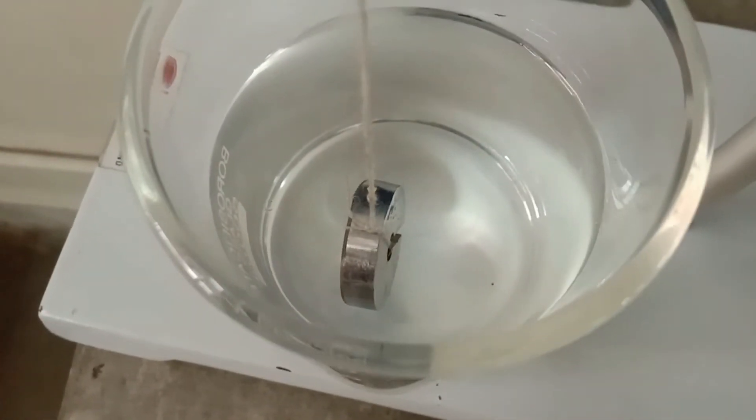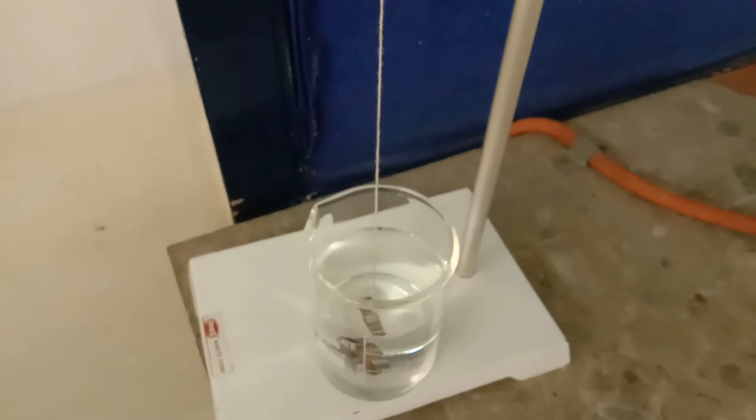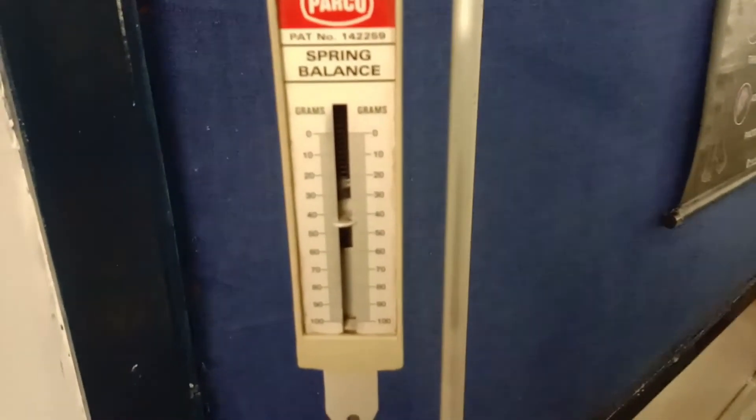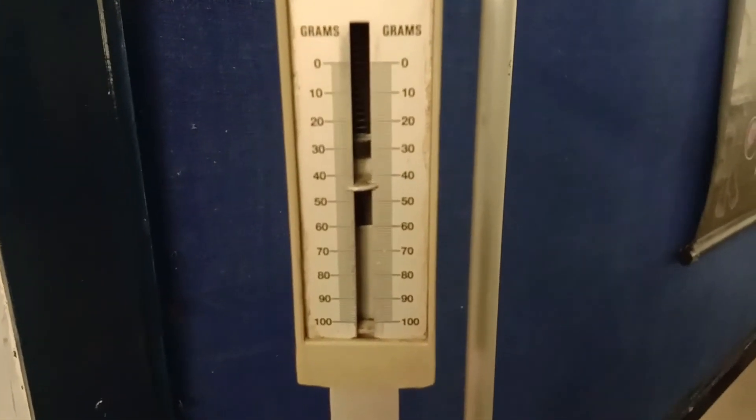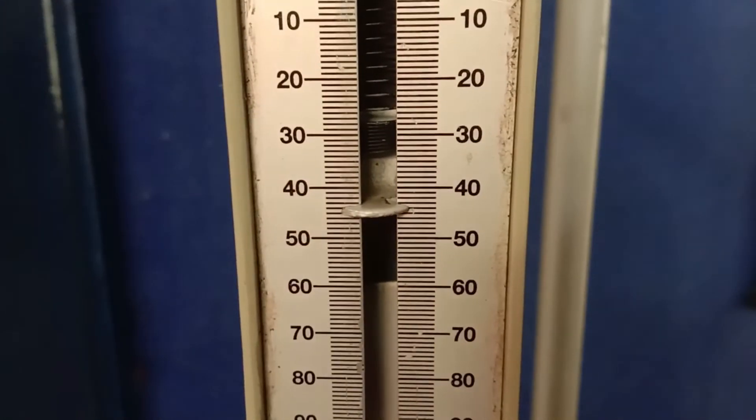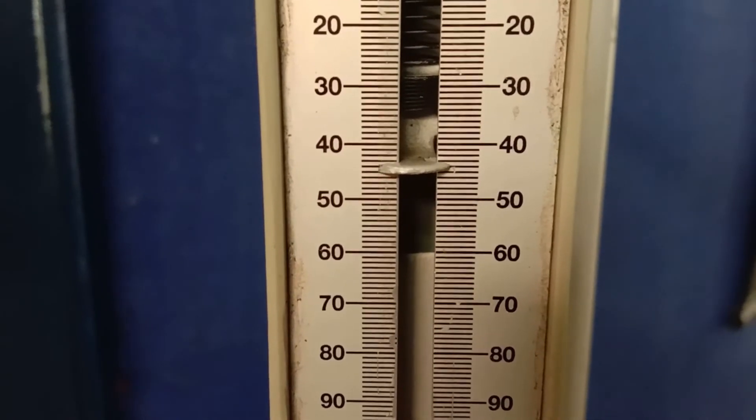So, we will note the apparent weight in the spring balance now. We can notice that the weight of this object in water is about 43 grams. Now, let's do the calculations to find out the value of upthrust or the buoyant force.